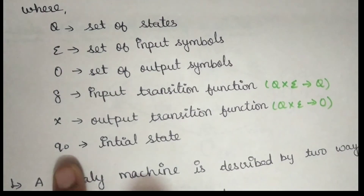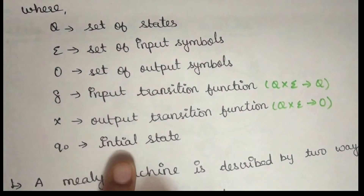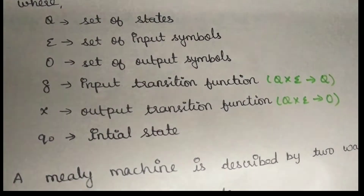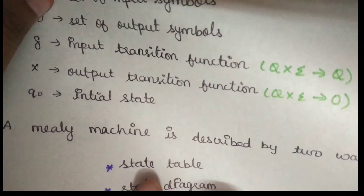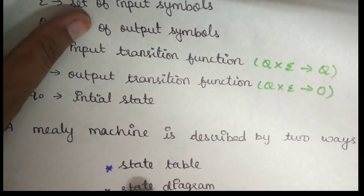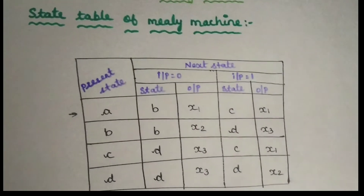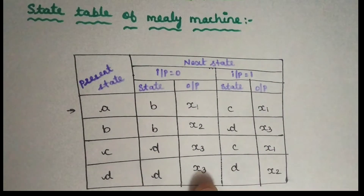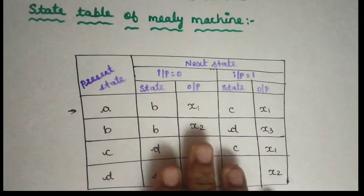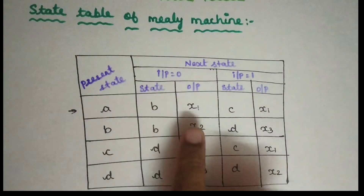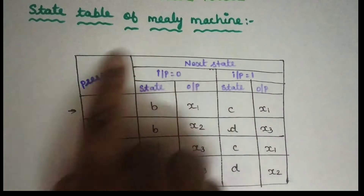This is the initial state of Mealy machines. You can represent a Mealy machine in two ways: one is a state table and one is a state diagram. The structure of the state table of a Mealy machine shows that the output depends on the present state and present input.